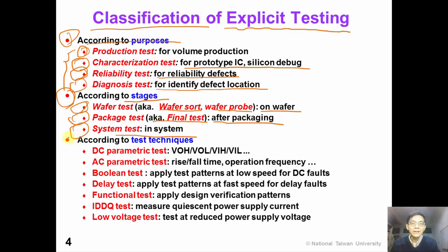Finally, explicit testing can also be classified according to test techniques. For example, DC parametric tests measure the DC performance of the ICs, such as VOH, VOL, VIH, and VIL. These parametrics are not frequency dependent.